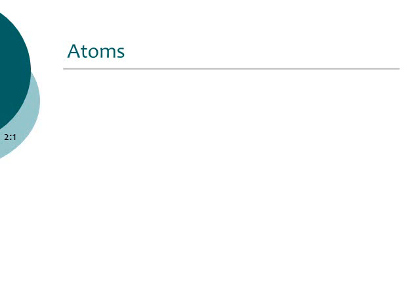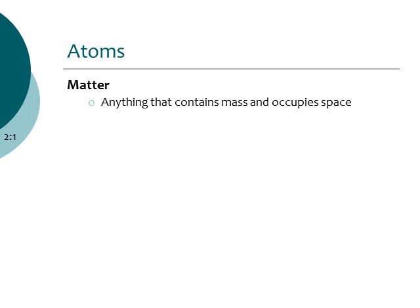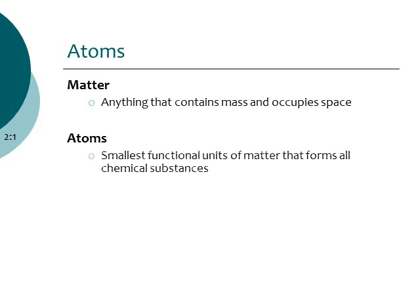We're going to start off with something called matter. Matter is basically anything that contains mass and occupies space. You, for example, have mass and occupy space, so you're made up of matter — just like tables, chairs, your notebook, your computer. This matter is made up of atoms. Atoms are defined as the smallest functional unit of matter, and these atoms form all of our chemical substances. Everything on earth, even in space, is made up of atoms.